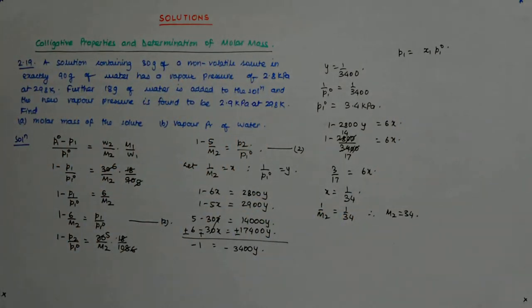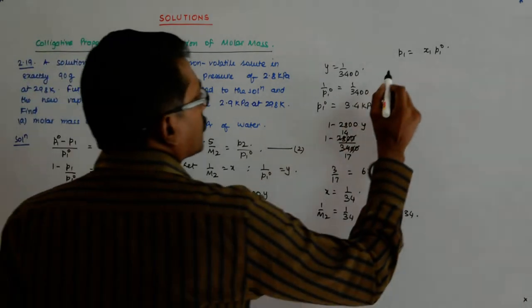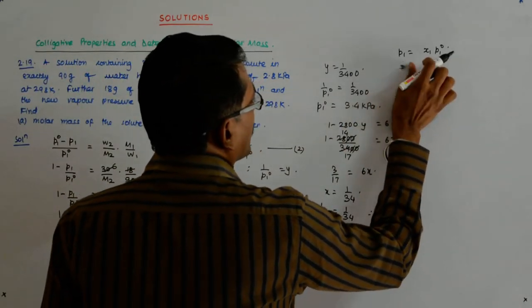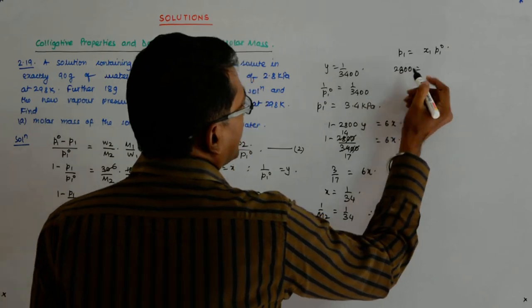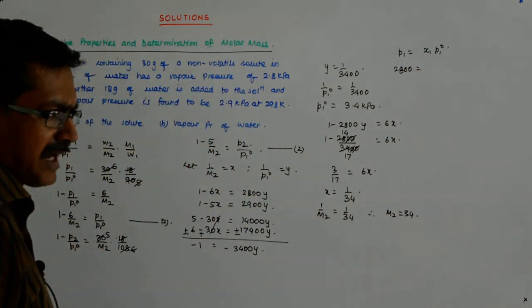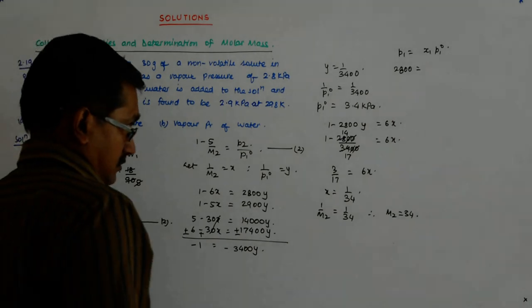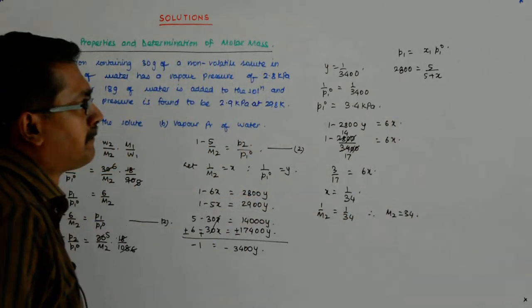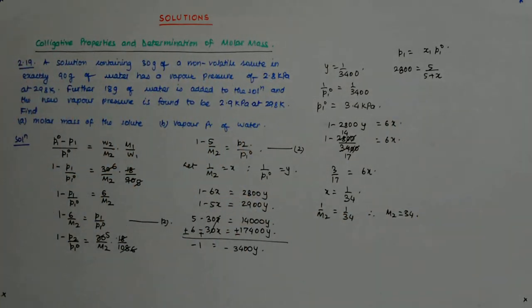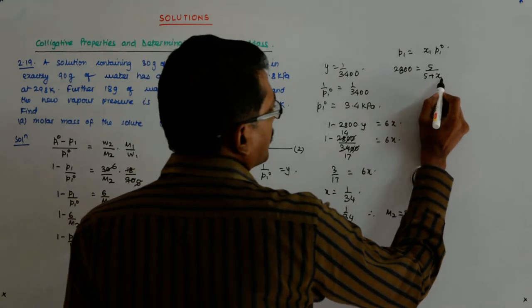This is the original equation from where we started. Correct. So this says 2800 is equal to x1. And I want, so it is 5 upon 5 plus x. Where x is the mole fraction of the,